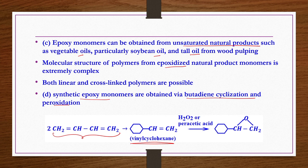A third type of epoxy monomers can be obtained from unsaturated natural products such as vegetable oils—particularly soybean oil—and tall oil from wood pulping. The molecular structure of polymers from epoxidized natural product monomers is extremely complex, and both linear and cross-linked polymers are possible. The fourth way is a synthetic route: via butadiene cyclization and peroxidation reaction. Two moles of butadiene undergo cyclization to produce vinylcyclohexene, which then reacts with hydrogen peroxide or peracetic acid to produce epoxy monomers.